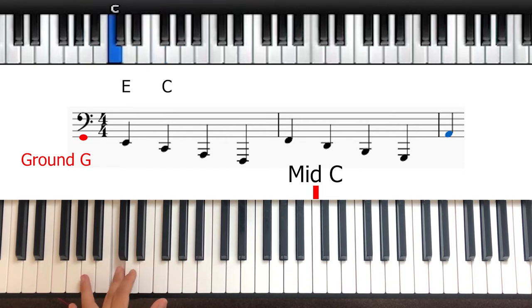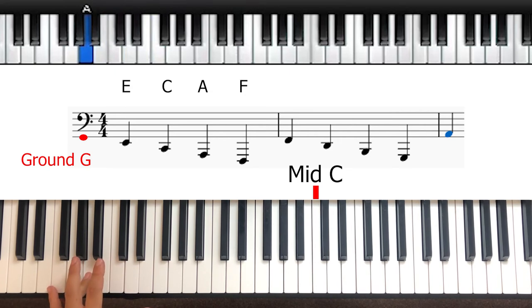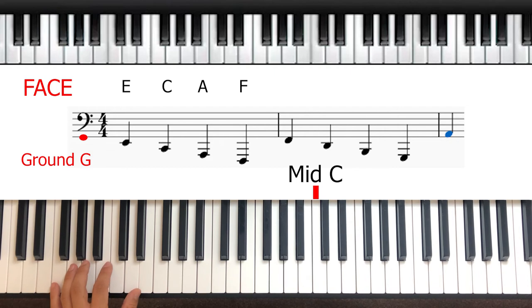E, C, A, and F if we go four lines below it, spelling FACE. And in between the gaps we have F, which is just below ground G, followed by D, B, and G.